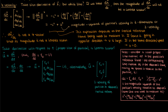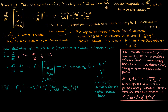So this is our four velocity U in column vector form. It has four components: the first is the time component, and the other three are spatial components corresponding to the Lorentz factor gamma times the three velocity v. To find the magnitude squared of this four velocity, we perform the matrix product using the Minkowski metric eta. When we do that, we get negative gamma_v squared times c squared, plus gamma_v squared times the sum of squares of dx/dt, dy/dt, and dz/dt — which is just v squared.